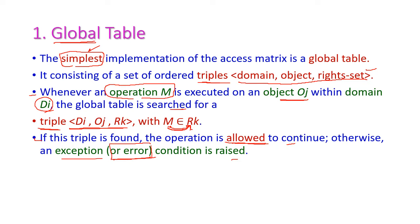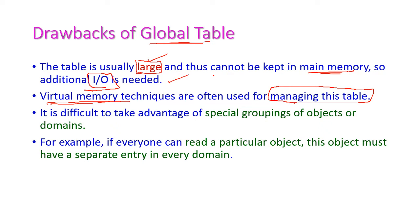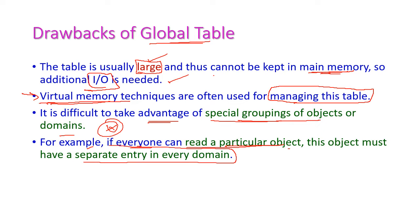Otherwise, an error message will be given to the user. The drawback of global table is that it is very large in size, so we cannot accommodate it in main memory, hence it requires additional I/O or secondary storage devices. We have to implement virtual memory technique to manage this very large global table. Also, it is difficult to take advantage of special groupings of objects or domains. For example, if anyone reads a particular object, that object must have a separate entry in every domain, so the size increases greatly, and managing and maintaining this global table is very difficult.